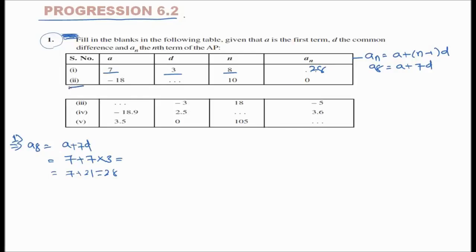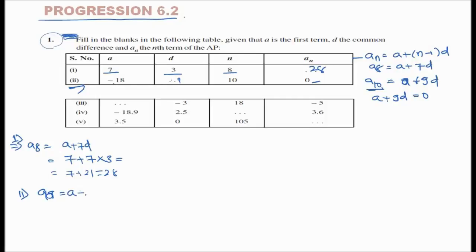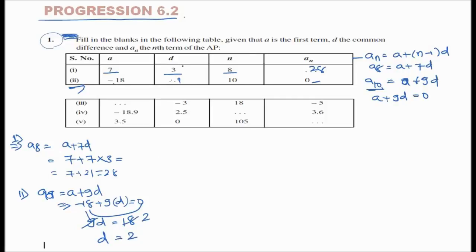Second one: a = -18, n = 10, and an = 0. So a10 = a + 9d. Since a10 = 0, we have -18 + 9d = 0. So 9d = 18, and d = 2 is the answer.